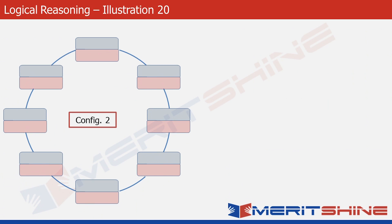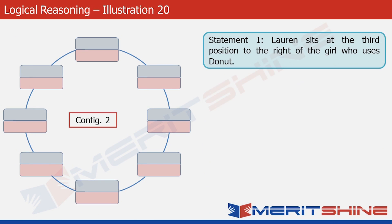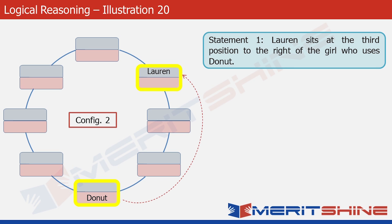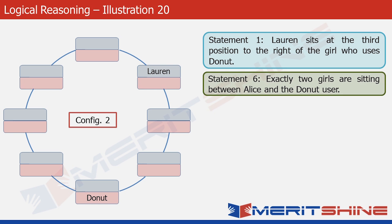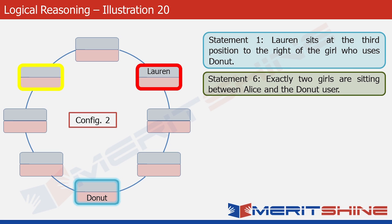So that's Configuration 2. Let's try and fill this up. Statement 1 says Lauren sits at the third position to the right of the girl who uses Donut. We can pick any two boxes with a gap of two boxes between them and put Lauren and Donut here. Statement 6 says that exactly two girls are sitting between Alice and the Donut user. With two possible positions for Alice, we can see that one is already occupied by Lauren. So Alice fits in the other position.